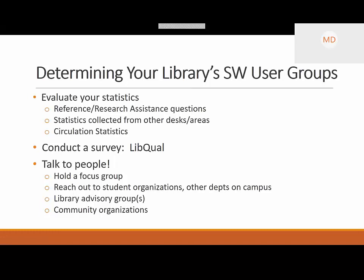In order to figure that out, you can look through your statistics — reference or research assistant questions, whether you record the user type to determine if you're assisting a social work student. Some libraries have a separate government documents area, separate reference and circulation desks, or one combined. Accumulate all those different stats to see the picture. You can look at circulation stats of physical materials within social sciences to see what popular topics are being checked out. You can also conduct a survey — we participate at ESU in LibQual, where we ask respondents to identify their discipline so you can narrow results to folks within social work.